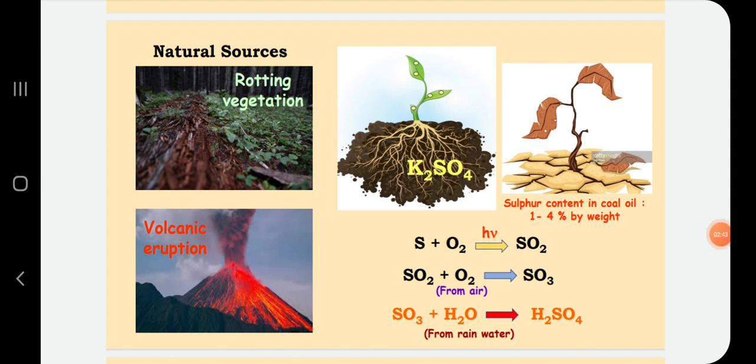The natural origin of acid rain are rotting vegetation and eruption of volcanoes. In fact, plants need little amount of sulfur to grow and intake mainly from potassium sulfate which is K2SO4 found naturally in soil. These sulfur atoms become bonded with carbon atoms in the leaf proteins and after the death of the plant, after millions of years, these sulfur atoms remain bonded with the carbon atom. So, about 1 to 4 percent by weight, sulfur is present in coal, oil or fossils.